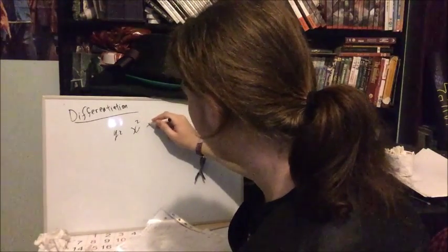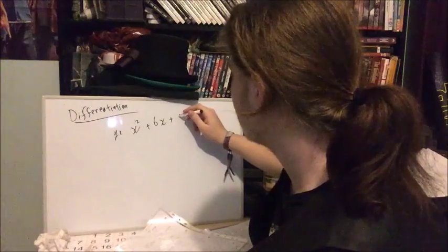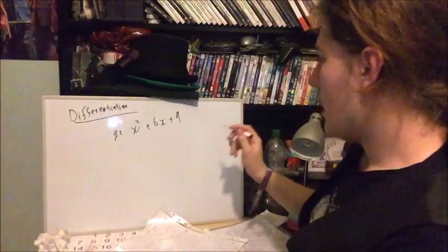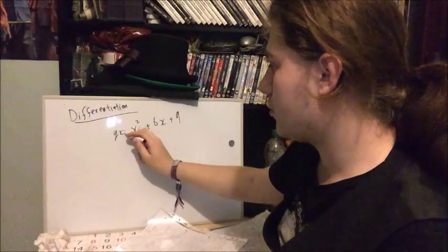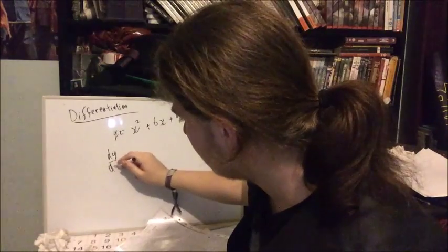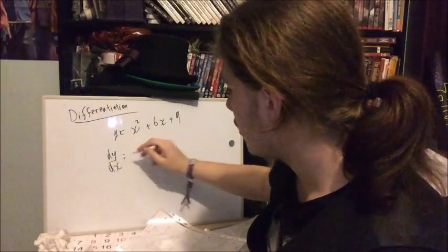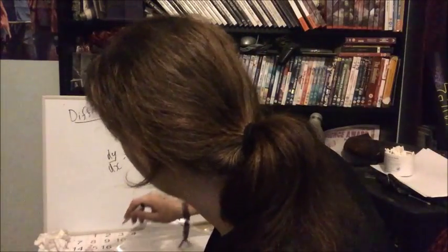x squared plus 6x plus 9. Now if you want to write out the first derivative, that is what dy over dx is, you have to use this rule and it's important that you know this rule.